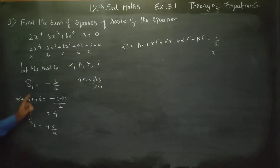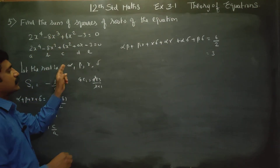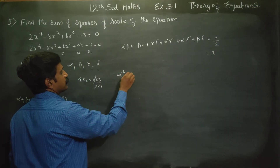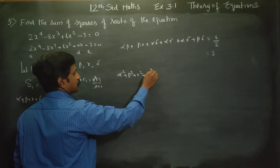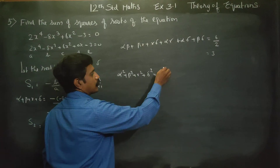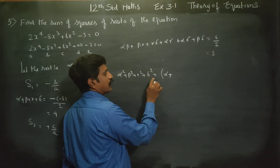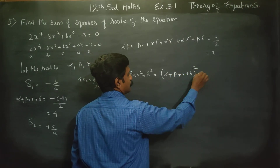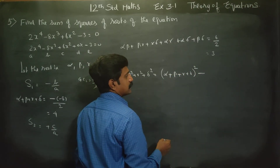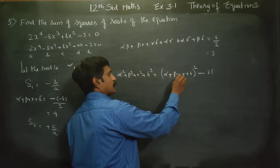The question asks to find the sum of the squares: alpha square plus beta square plus gamma square plus delta square. In 9th standard the form uses 3 letters; here it is 4 letters — alpha, beta, gamma, delta — square minus two times the sum taken two at a time.